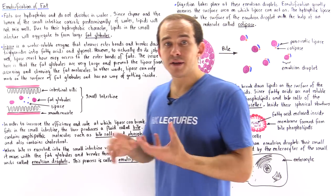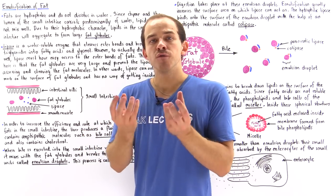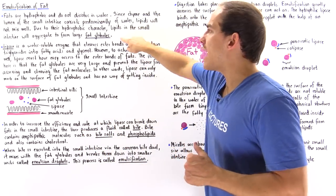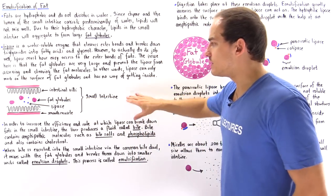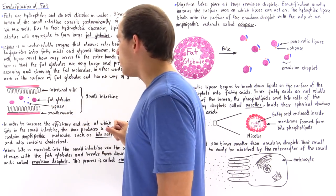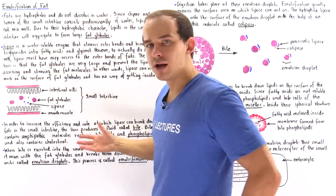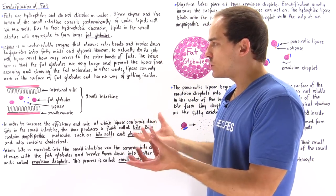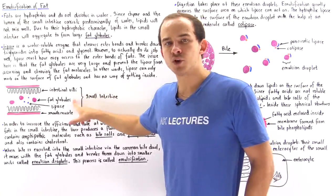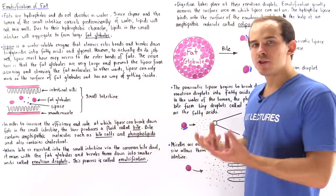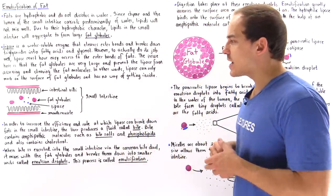Because fats and lipids cannot mix with anything else, they aggregate together to form very large structures known as fat globules. If we examine a section of the small intestine, we can see the lumen, the villi, and the smooth muscle that contracts to create peristalsis. The individual spherical molecules are the fat globules — essentially the aggregation of cholesterol, triglycerides, and other lipids we ingest.